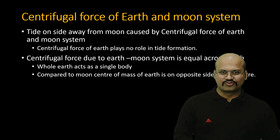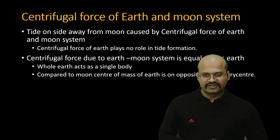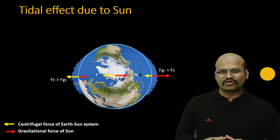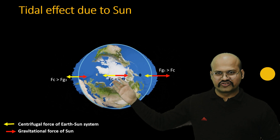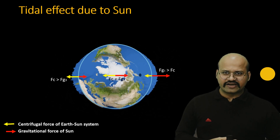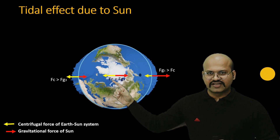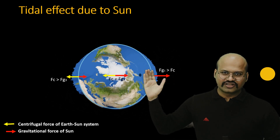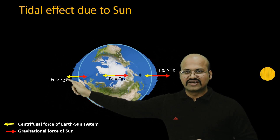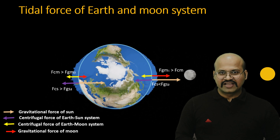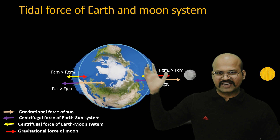Similarly, the sun creates tides through the same mechanism. The earth and sun rotate around their barycenter, which is located below the surface of the sun but not at its center. Because of this rotation, a centrifugal force acts away from the barycenter while the sun's gravitational pull acts toward the sun. These forces are equivalent at earth's center, but the imbalance on each side causes water to pile up facing the sun and on the opposite side. In normal conditions, both sun and moon apply their forces on earth, and tides are created under the effect of all four forces acting on both sides of earth.